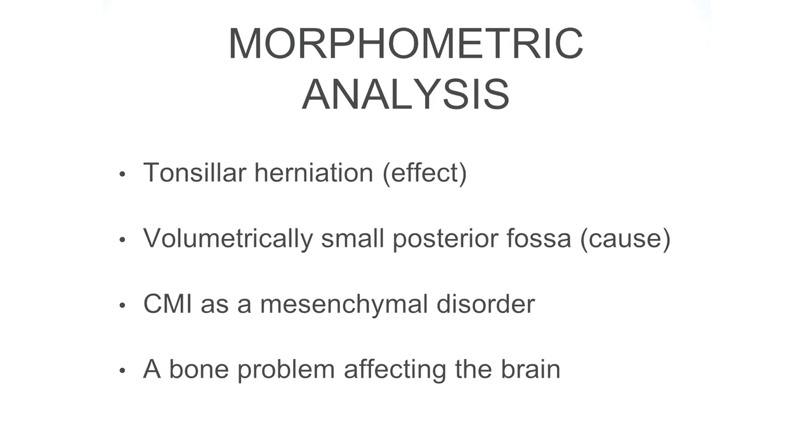The tonsillar herniation was not, as initially thought, an abnormality of the brain, but actually an abnormality of the skull leading to shifting of an otherwise normal brain. Chiari Malformation was for the first time identified as a mesenchymal disorder. Mesenchymal tissue is present in developing stages of the fetus and leads to the formation of many structures including the bones. So Chiari Malformation is a disorder from the precursor of what ends up being bone in the adult — a bone problem affecting the brain.